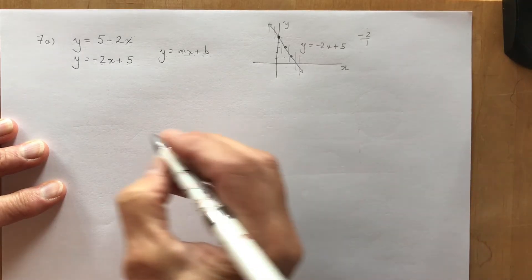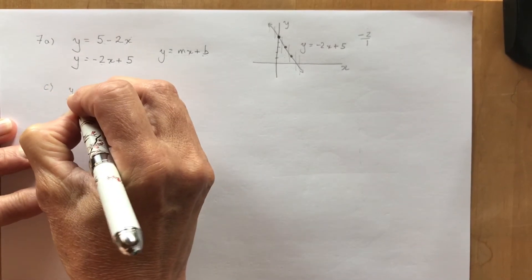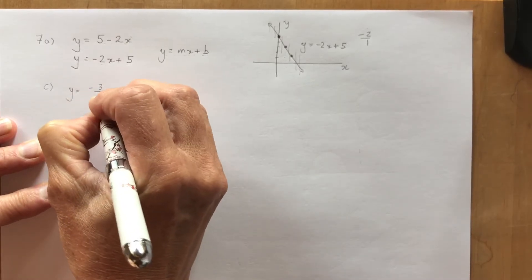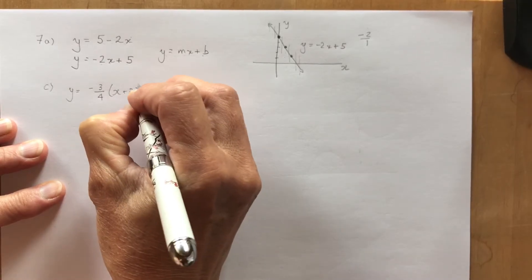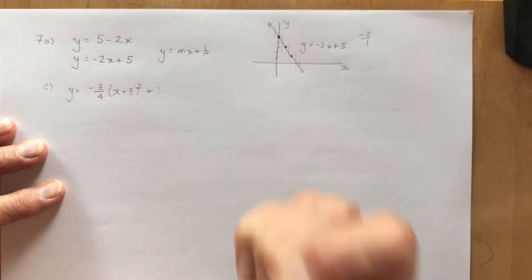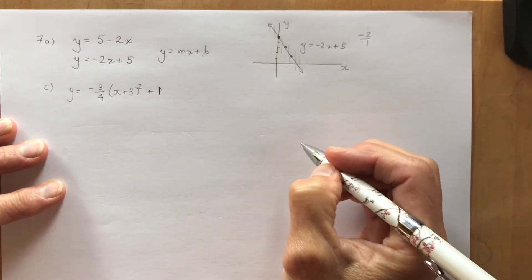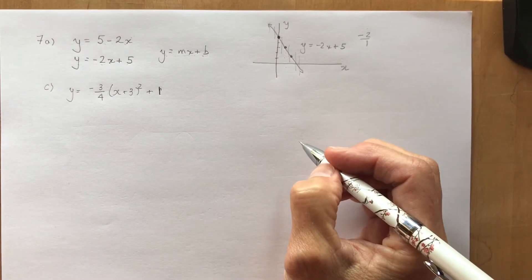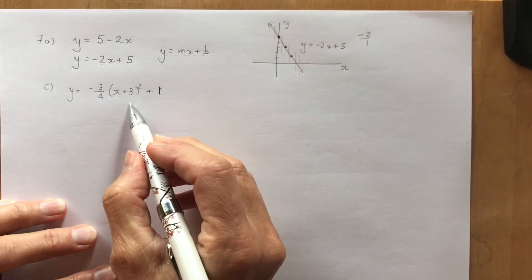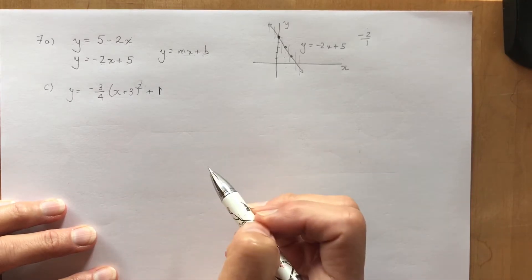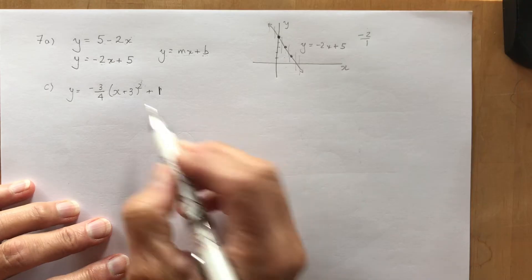I'm going to do 7c as well because that's another one that some people had some trouble with: y equals minus 3 quarters times x plus 3 squared plus 1. Now if you remember your grade 10 math, this is a quadratic. It's a quadratic because it has a degree of 2 and you should be able to identify the vertex from this.